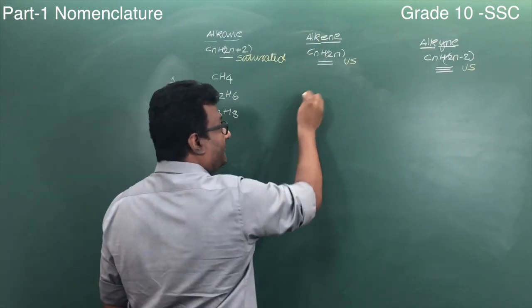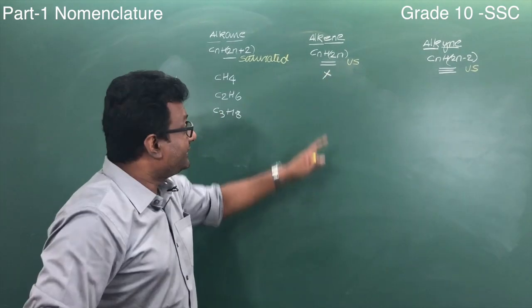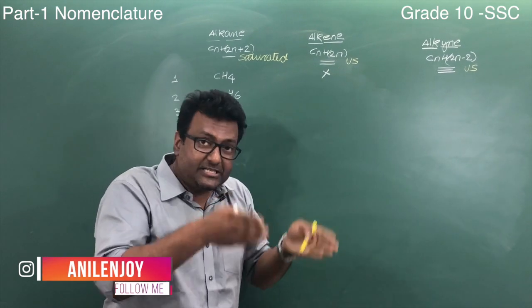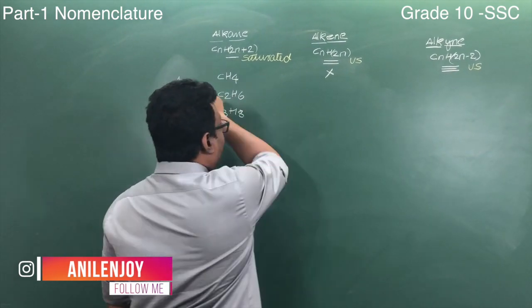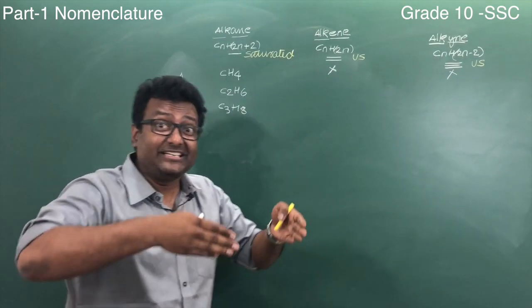If I say alkene, when I put 1 in this formula, what will I get? Nothing, you know why? Because for a double bond to exist, there has to be 2 carbon atoms. When I put n equals 1 for alkyne, what do I get? Nothing, because there has to be at least 2 carbon atoms for a triple bond.